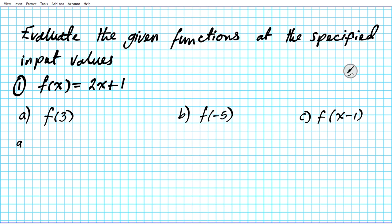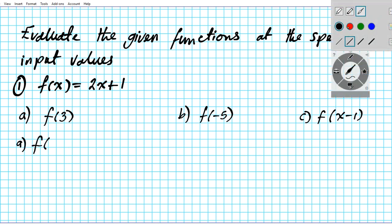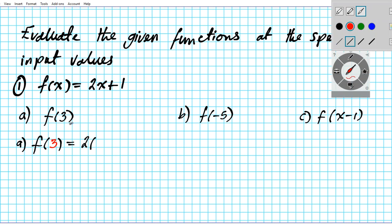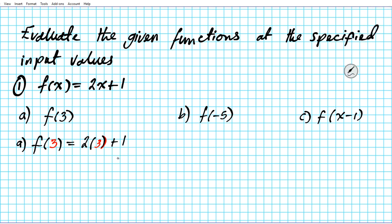Let's start with the first part, f of three. To evaluate f of three, all you're simply going to do is substitute all the x components of this function with three. So instead of two x plus one we have two times three plus one. Using the order of operations we multiply first: two times three is six, plus one — that's seven, your final result.